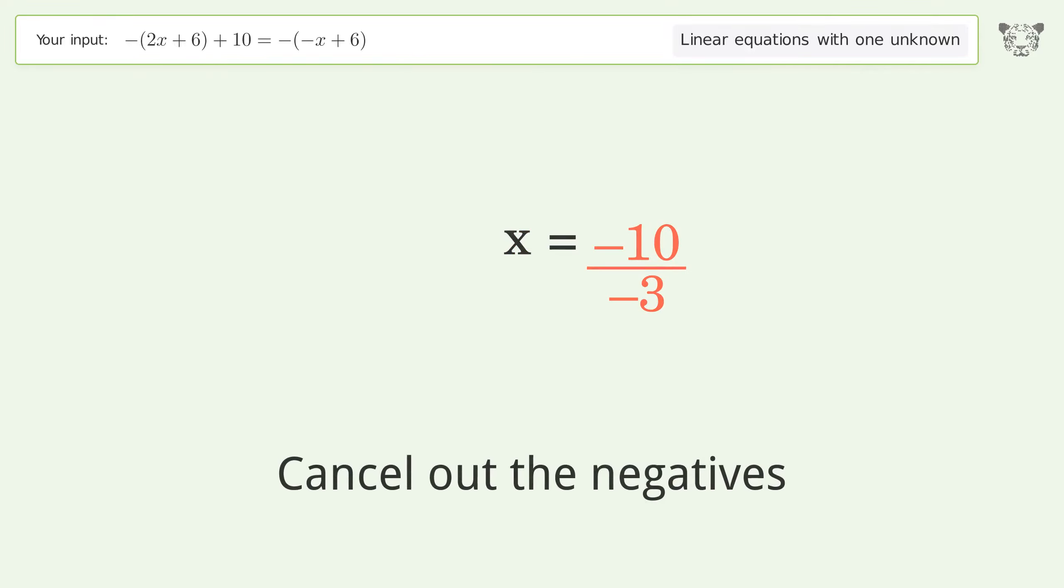Cancel out the negatives. And so the final result is x equals 10 over 3.